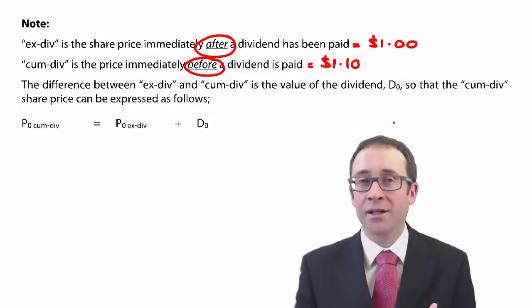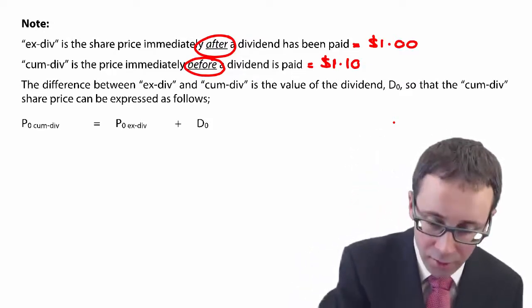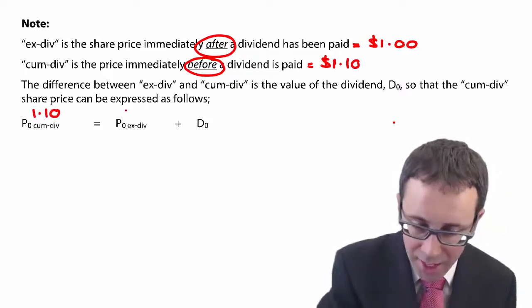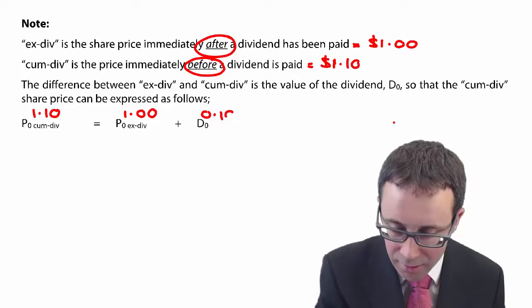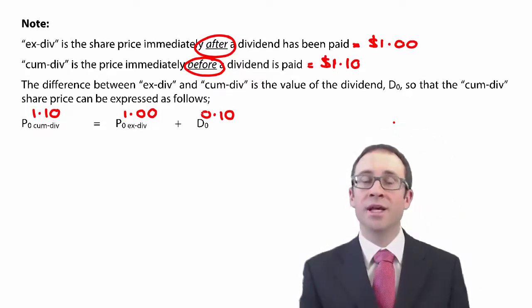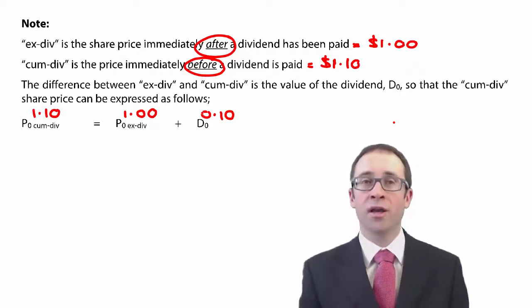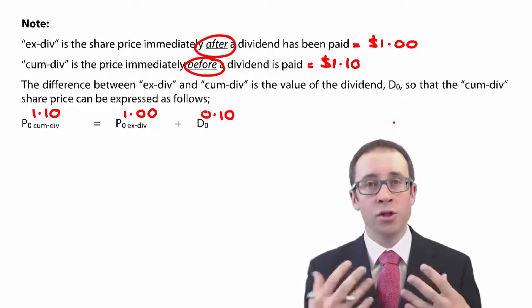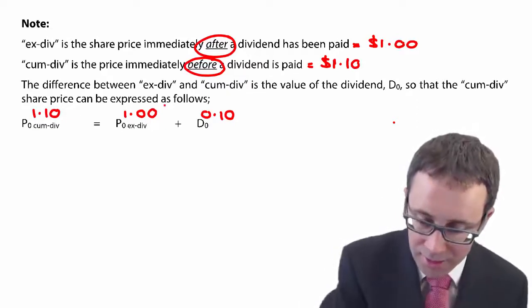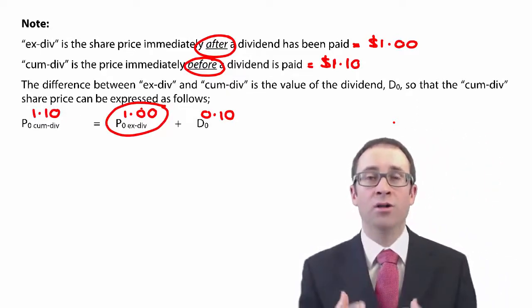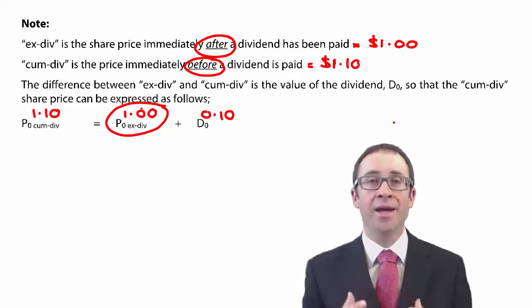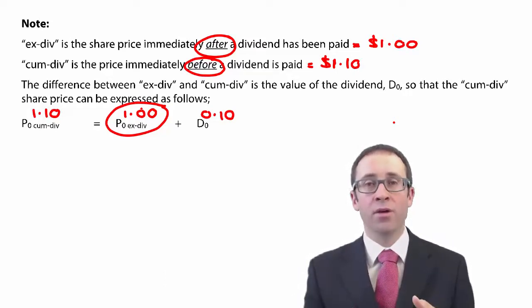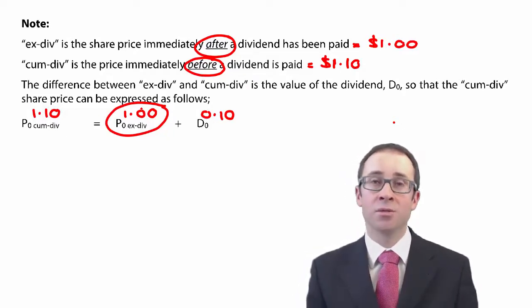We can formalise that: the cum-div price ($1.10) equals the ex-div price ($1.00) plus the dividend just paid ($0.10). What you need to be careful of in the exam is to look at which share price you are given. If you're given the cum-div price, you will need to adjust it to find the ex-div price, because it is the ex-div price that goes into our cost of equity formula. Remember, the cost of equity is D0 times (1 + G) divided by P0 ex-div. So if you're given the cum-div price, you will need to adjust it to work out the ex-div price to put in the formula.